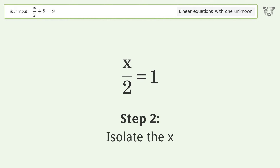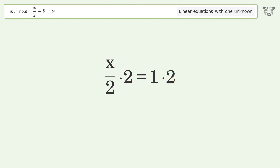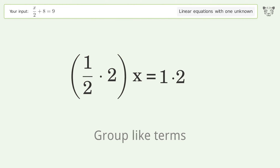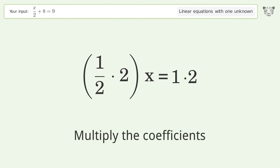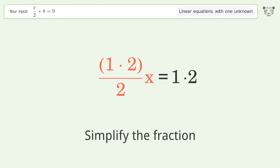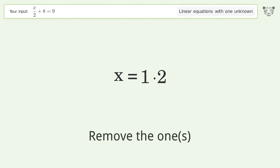Isolate the x by multiplying both sides by 2. Group like terms, then multiply the coefficients. Simplify the fraction, and finally remove the ones.